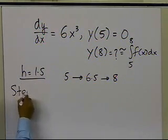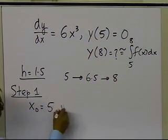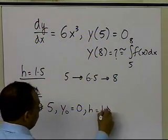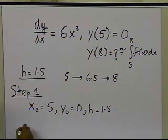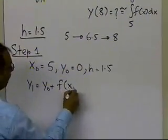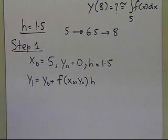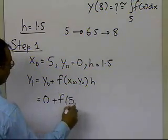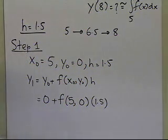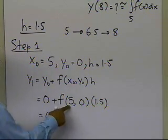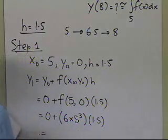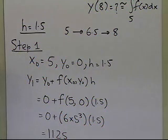So let's look at step 1. Step 1 is x₀ is now 5, y₀ is 0, because the value of y which I'm choosing at x equal to 5 is 0, and of course h is 1.5. So from here, I'll get y₁ equal to y₀ plus the value of the function at x₀, y₀ times h, that's your Euler's method formula. So y₀ is 0, the value of the function at x₀ is 5, the value of y₀ is 0, h is 1.5. So from here, I get 0, plus, what is the value of the function at x equal to 5 and y equal to 0? It is 6x³, so it's 6 times 5³ times 1.5, and the value here turns out to be 1125.